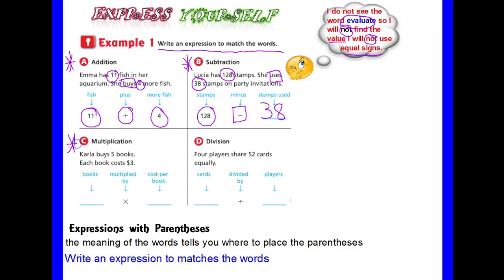Let's look at multiplication. Carla buys 5 books. The number of books that she's going to purchase is 5. Each book costs 3 dollars. So every book that she's going to buy is multiplication. Each costs 3 dollars. So 5 times 3 dollars.